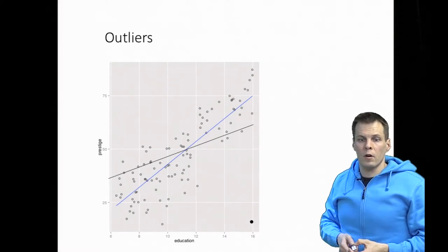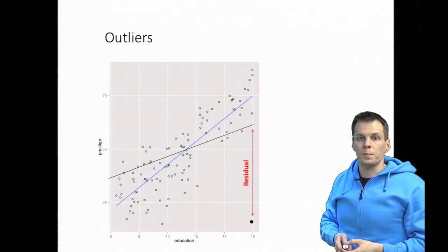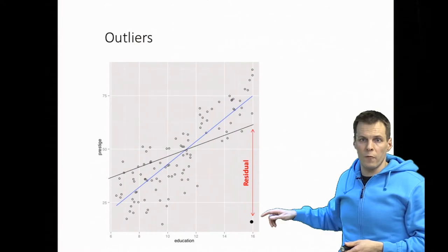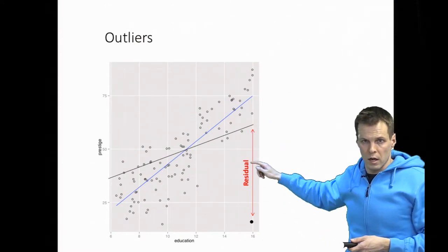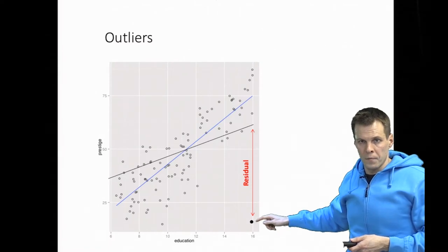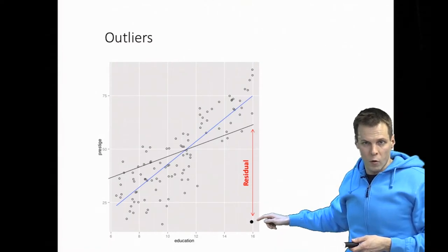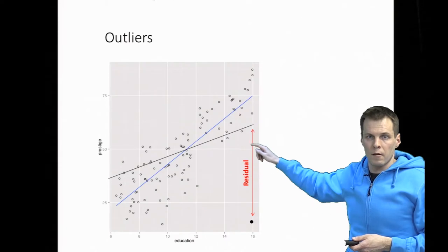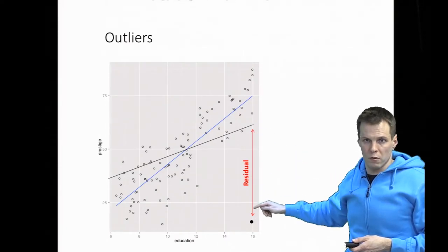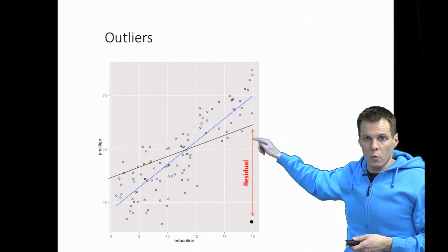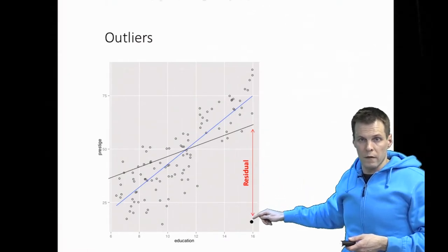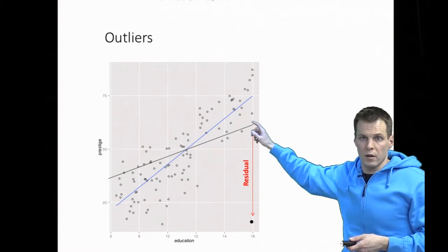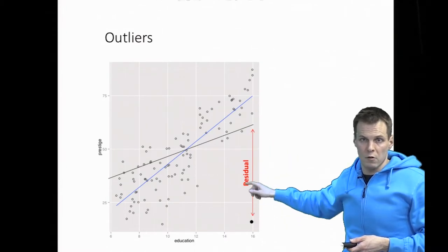The effects of outliers depend on two different things. First, residual—how far the outlier is from the regression line. The outlier pulls the regression line toward itself, and the strength or force is related to the residual. If one observation has very large residuals, it pulls the regression line very strongly because it's the square of the residual that matters.